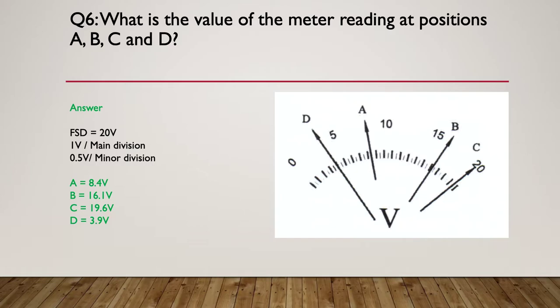Now for the answer, our full scale deflection was 20 volts. We had one volt per main division and 0.5 of a volt per minor division.